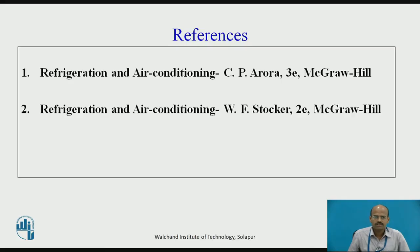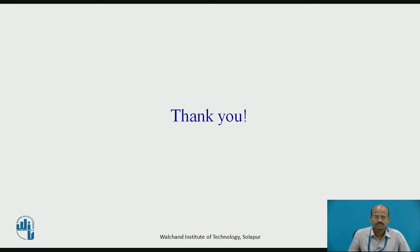This you can convert into kilo joule per minute or BTU per pound etc. But, for all numerical calculations we will be considering 1 ton of refrigeration as 3.5. For further study, you can refer refrigeration and air conditioning by CP Aurora and refrigeration and air conditioning by WF Stoker. Thank you.